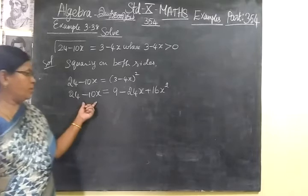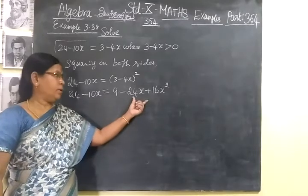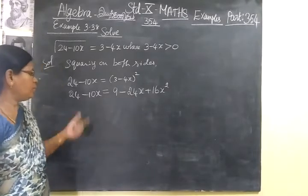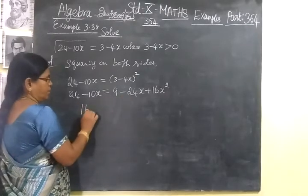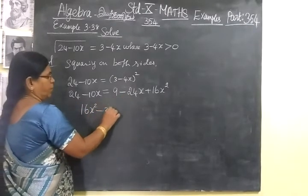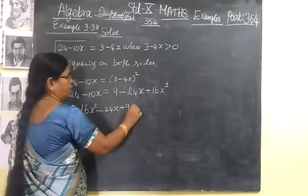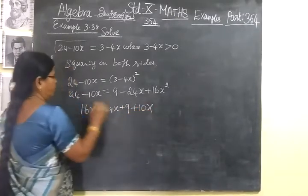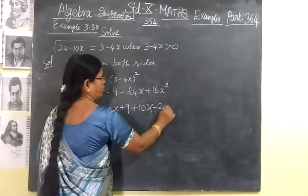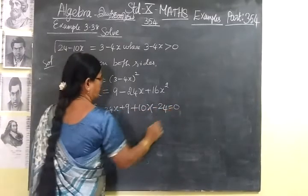Any one side only you have to change the sign. For convenience, these two terms we are changing the sign. This you write as it is: 16x²-24x+9. Here plus 10x, then minus 24 equal to 0.